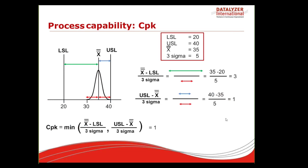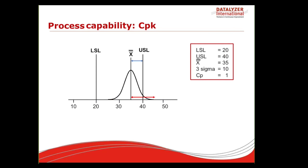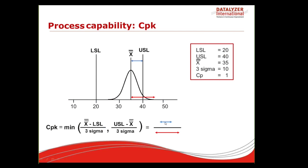The CPK certainly takes into account whether the process is centered or not — CP does not. In another example, the CP value is 1, meaning total variation equals allowed variation, but the process is off-center. The most critical specification limit is the upper one, so we take (USL − X-bar) / 3 sigma = (40 − process average) / 3 sigma = 0.5. So the CPK value is 0.5 and the CP value is 1. When a process is off-center, CPK is always lower than CP.